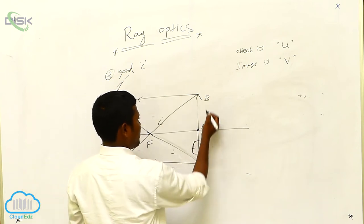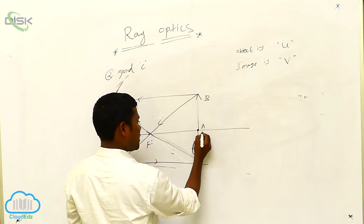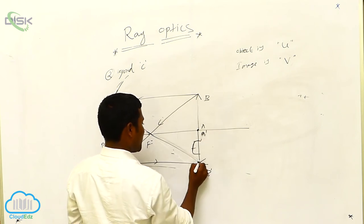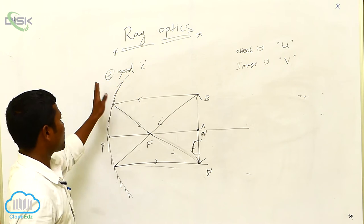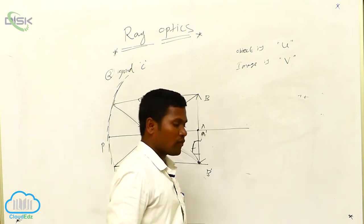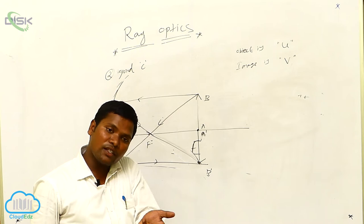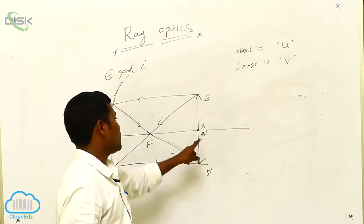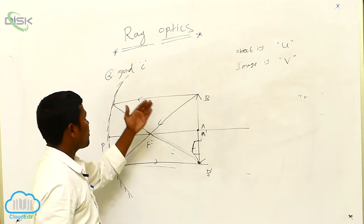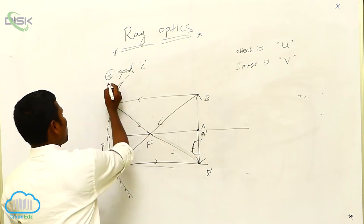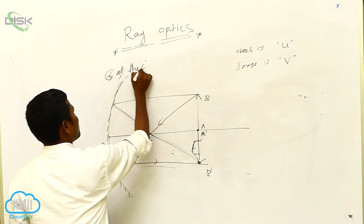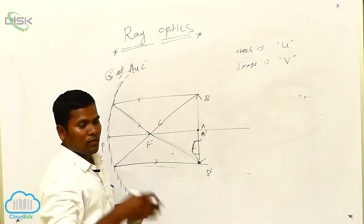So, this is which point? A point. This is which point? B point. Here A dash will be there, here B dash will be there. What is the third case? If you are taking the object at the center of curvature, then your image also you are getting at the same point — at C.